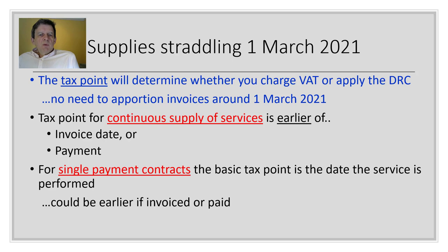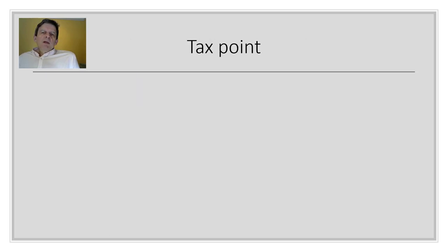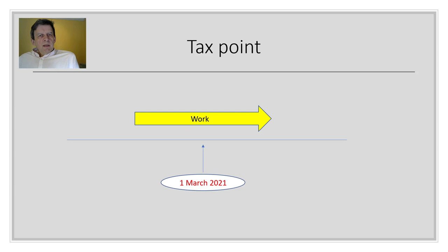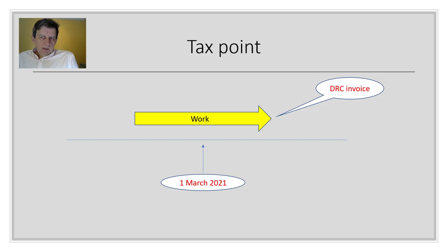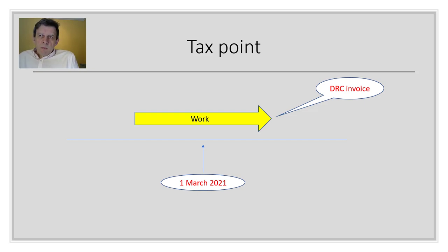For example, if a contract straddles the 1st of March 2021 — work done before and after — but it's not invoiced until late March, then the whole invoice is subject to the domestic reverse charge. You don't apportion between old and new rules. The same applies to self-billing and authenticated tax receipts, where the tax point is normally when entered into the records. If entered in March, new rules apply; if entered in February, old rules apply.